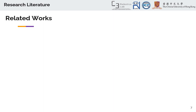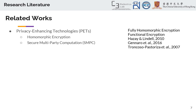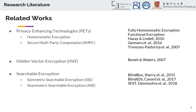Related works, as I mentioned before, can be categorized into three parts. First, PETs or privacy enhancing technologies, such as homomorphic encryption and multi-party computation. Next, we have hidden vector encryption, or HVE, worked on by Boneh and Waters. And searchable encryption — both symmetric and asymmetric — which are most popular in the recent literature. BlindBikeSum, BlydaNDS, and SESD are all asymmetric searchable encryption schemes.